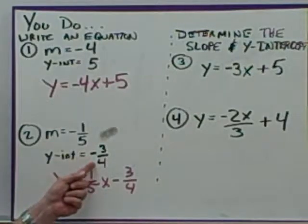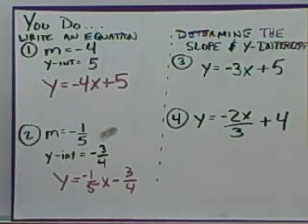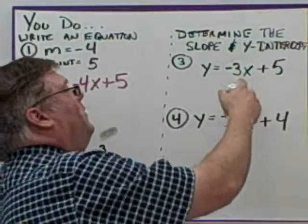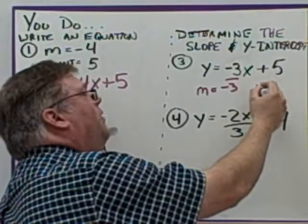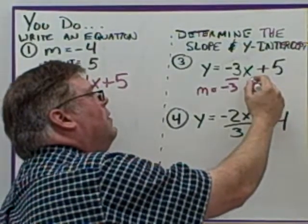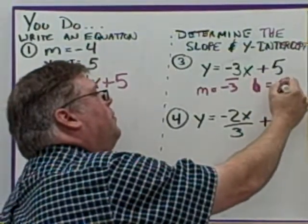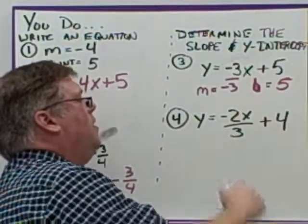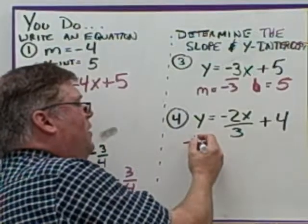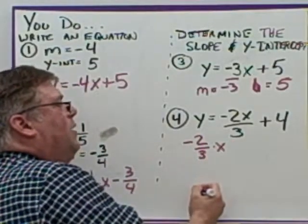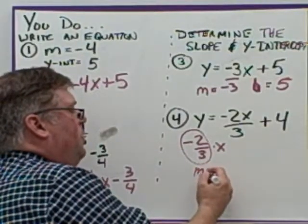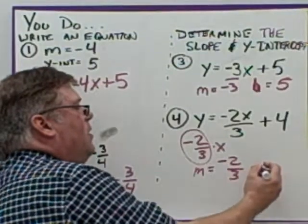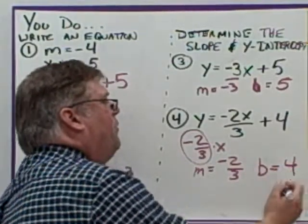Make sure to identify correctly — the fraction is the y-intercept, and it can be a fraction. For determining the slope and y-intercept: the slope is the number times x, so the slope is negative 3 and the y-intercept b equals positive 5. For the other equation, it is the same as negative two-thirds times x, so the slope is negative two-thirds and the y-intercept equals positive 4.